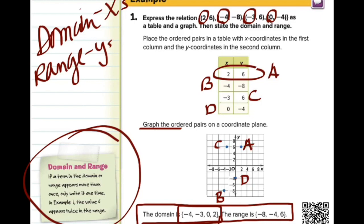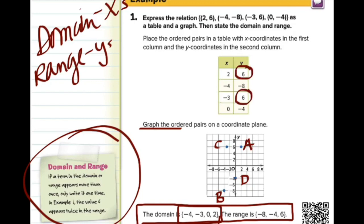If you look at the graph, points A and C have the same y-value — you could draw a horizontal line through them, meaning we have a repeated range value. To help keep track of domain versus range: domain comes before range in the alphabet, and x comes before y. So domain = x-coordinates, range = y-coordinates. If you need more help, scan the QR code in the corner.